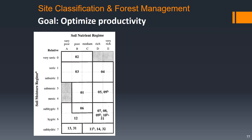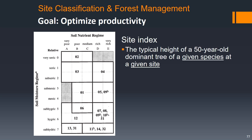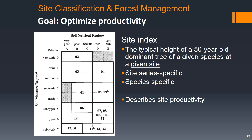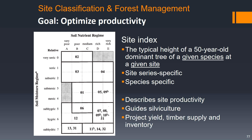If we're managing for timber and our goal is to optimize productivity, in addition to thinking about which tree species to plant, we might be interested more generally in the productivity of the site. For that we can use Site Index. Site Index is a measurement of the typical height of a 50-year-old dominant tree of a given species at a given site. It is site series specific and species specific, and it can guide silviculture and also help project yield and timber supply and inventory.